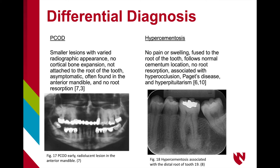With hypercementosis, there is no associated pain or swelling. This lesion is fused to the root like cementoblastoma is, but cementoblastoma presents more as a circular radiopacity at the apex, while hypercementosis presents as a radiopacity in continuation with where normal cementum is located. Hypercementosis is also commonly associated with hyperocclusion, Paget's disease, and hyperpituitaryism.